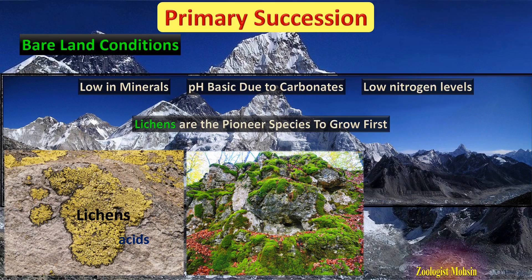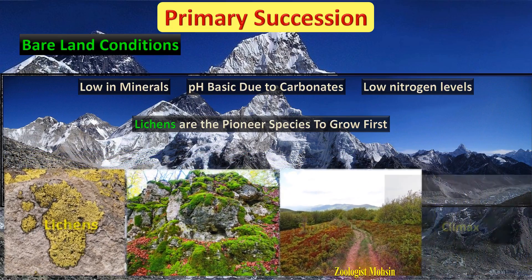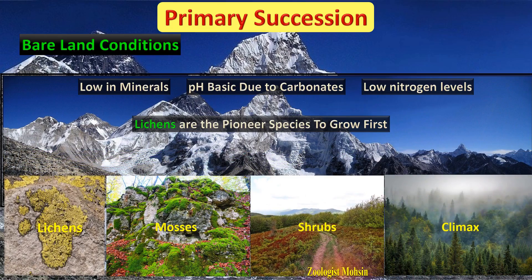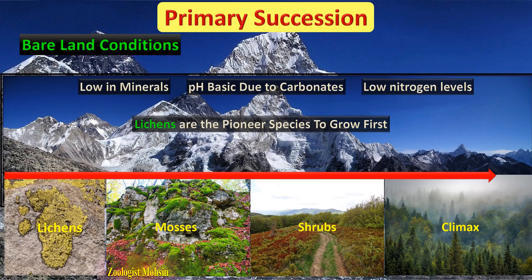When a soil layer is formed, the land becomes feasible for intermediate species like herbs and shrubs. This natural process continues and the land ultimately becomes enriched with higher plants and trees, and the final community is reached, which is stable and termed the climax community.